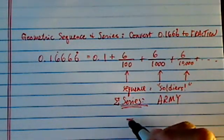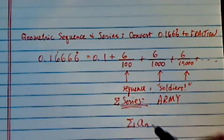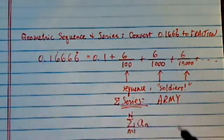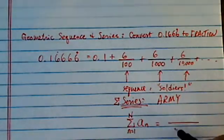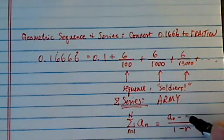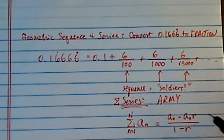Alright, now here we do have a formula. Summation of An when n equals 1 to N is equal to, in the denominator 1 minus R, and in the numerator the first term A0 minus the last term, which is A0 times R to the n plus 1.